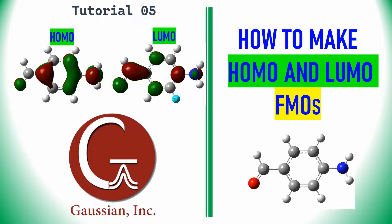Dear friends, this is my tutorial. In this tutorial you can learn how to make HOMO and LUMO frontier molecular orbitals. The system I have chosen is 4-aminobenzaldehyde.